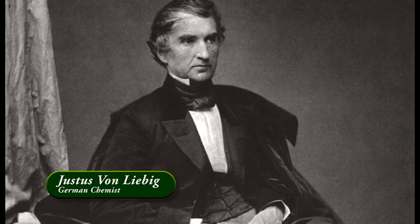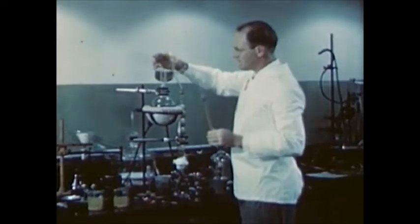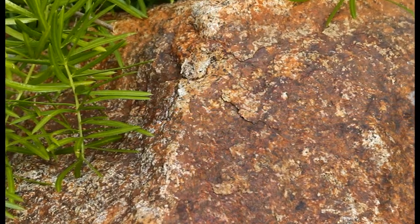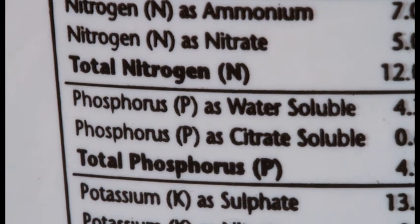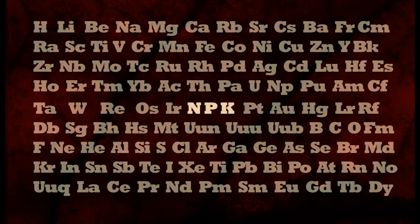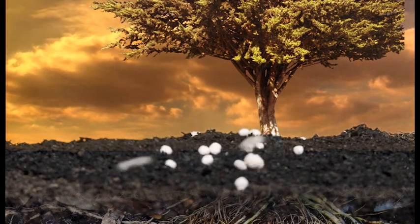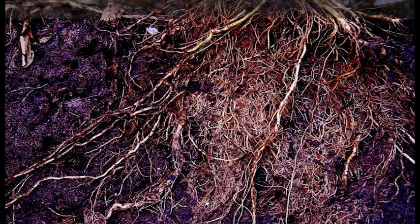A famous chemist in history, Von Liebig, in the 1800s discovered how he could manufacture sulfuric acid and then break down rocks and basic elements to make a salt-based fertilizer using just NPK — that is all a plant needs to grow. But for a plant to be really healthy, we need the addition of other elements to build its body. And that's where we've gone wrong. Salt-based fertilizers do not favor the soil life, so once we started this industrial fertilizer process, soil fertility was continuously declining.